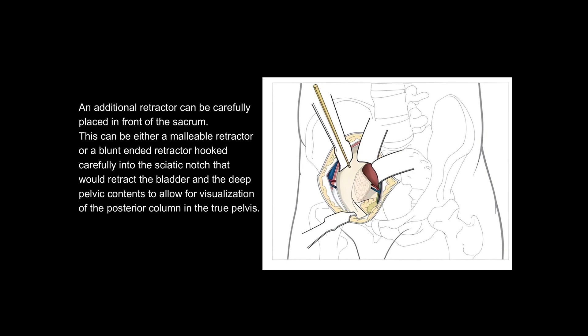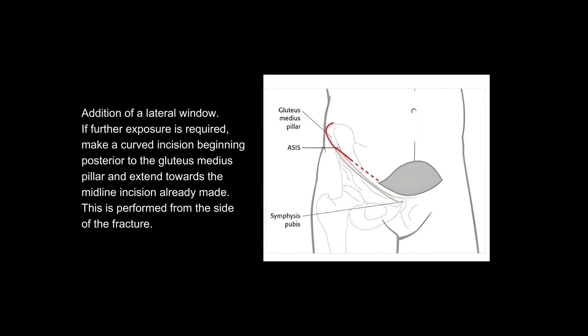Addition of a lateral window. If further exposure is required, make a curved incision beginning posterior to the gluteus medius pillar, and extend towards the midline incision already made. This is performed from the side of the fracture.